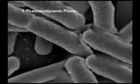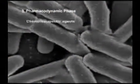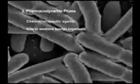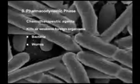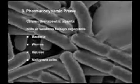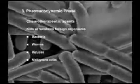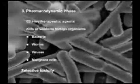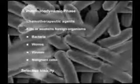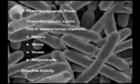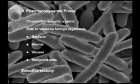The third action is caused by chemotherapeutic agents, which kill or weaken foreign organisms, such as bacteria, worms, viruses, and malignant cells. The principle of action for these agents is selective toxicity, meaning the drug must be more toxic to the parasite than to the host.